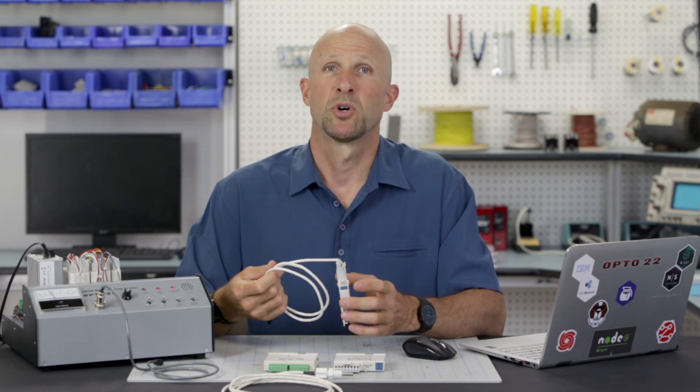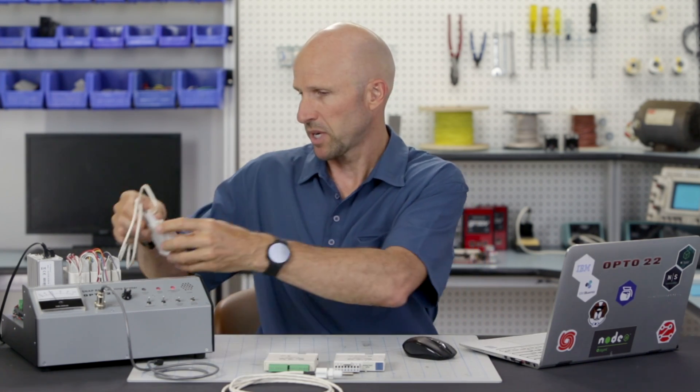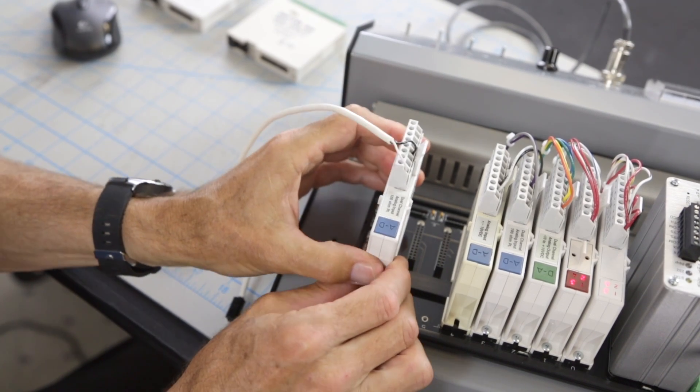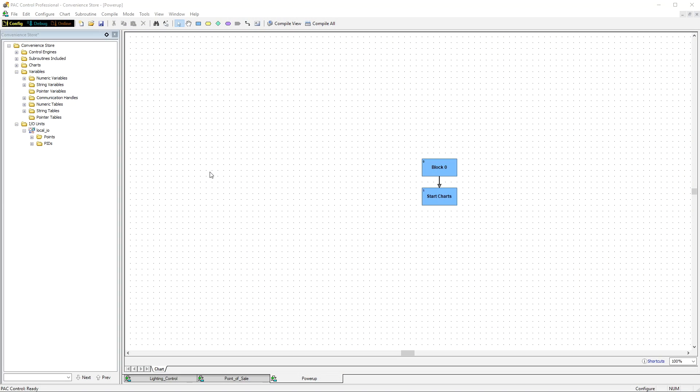Now I'm going to add the temperature module to the IO rack by snapping it into place. I'm going to put it in position seven here on the end. So that's the wiring and the module installed, so now let's go to the laptop and configure the software.